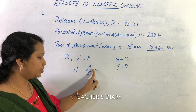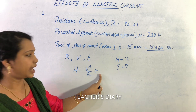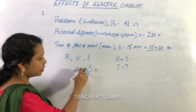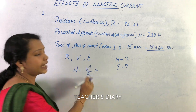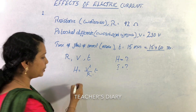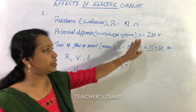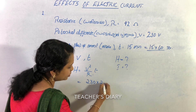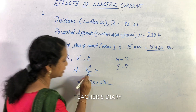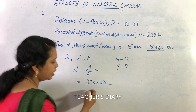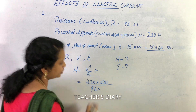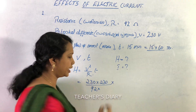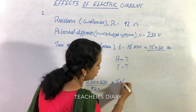We apply the equation H is equal to V squared by R into T. V squared is 230 into 230. Resistance is 92 ohms. Time is 15 into 60 seconds. We substitute these values and calculate the heat produced.